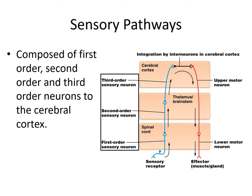Let's look at the sensory pathways first. Sensory pathways are composed of first order, second order, and third order neurons to the cerebral cortex. Remember, sensory pathways are going from the peripheral nervous system toward the cerebral cortex, so these are all going to be ascending, and the neurons are named in order.